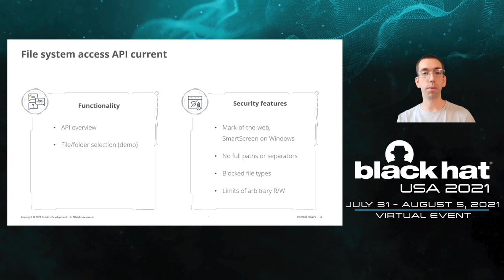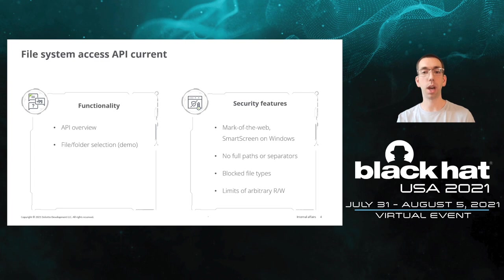The API has a number of different functions you can call which request access from the user to either open or write a file, and open and potentially write to a directory. There are a lot of secure features implemented here. First, every file that the page writes will get the mark of the web on Windows, which will trigger SmartScreen, antivirus filtering, and whitelisting. This presentation will be a little bit focused on Windows because that's the most popular desktop OS still.